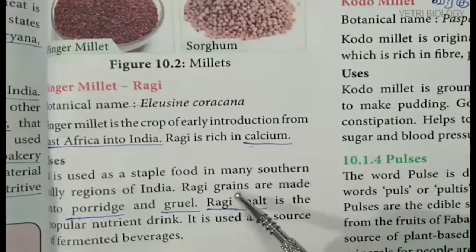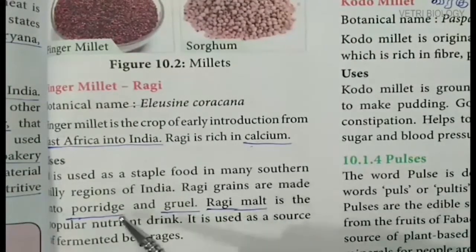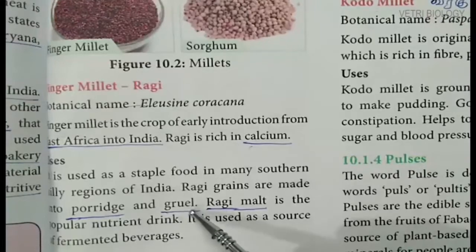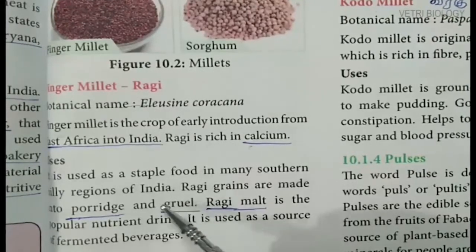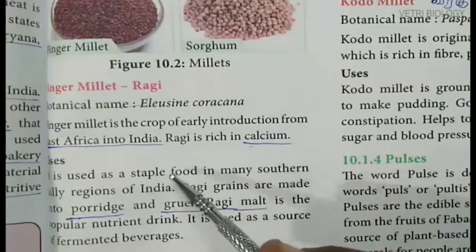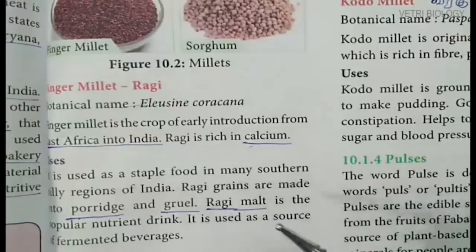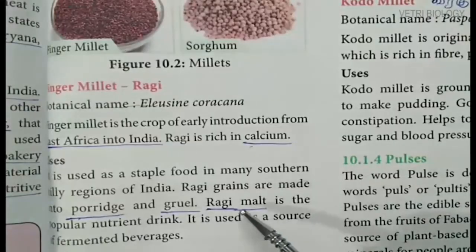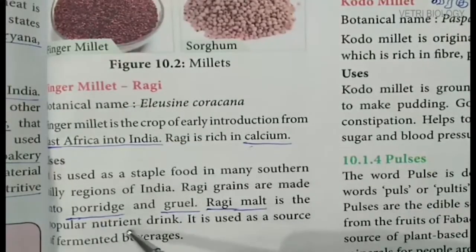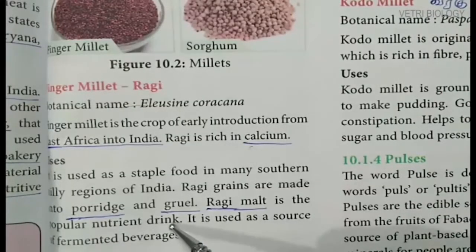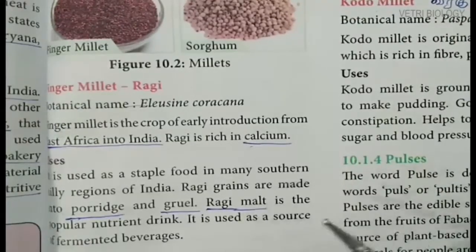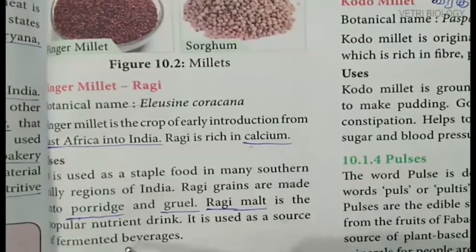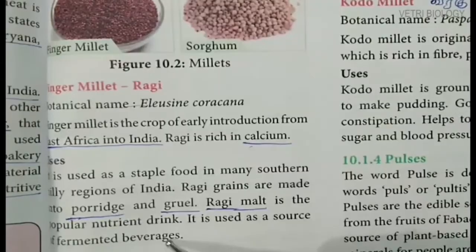Ragi grains are made into porridge and gruel. Ragi malt is a popular nutrient drink. It is also used as a source of fermented beverages.